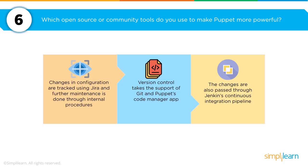You may be asked: which open-source or community tools do you use to make Puppet more powerful? This question asks you to look beyond the core foundation of Puppet itself. The three key options are: tracking configurations with Jira, extending version control with Git, and passing changes through Jenkins. So the three tools to highlight are Jira, Git, and Jenkins.